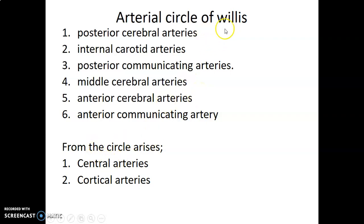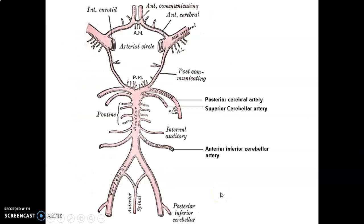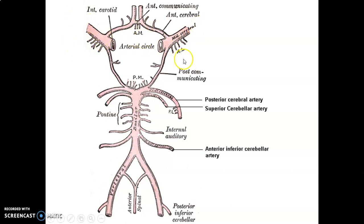From this circle of Willis, we have central arteries and cortical arteries. Central arteries are from the inner portions of these vessels that form the circle of Willis, while the cortical arteries are the major vessels.